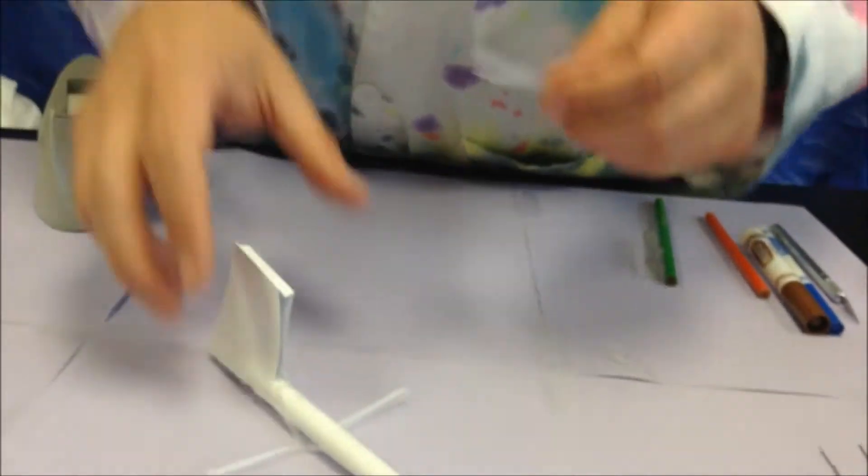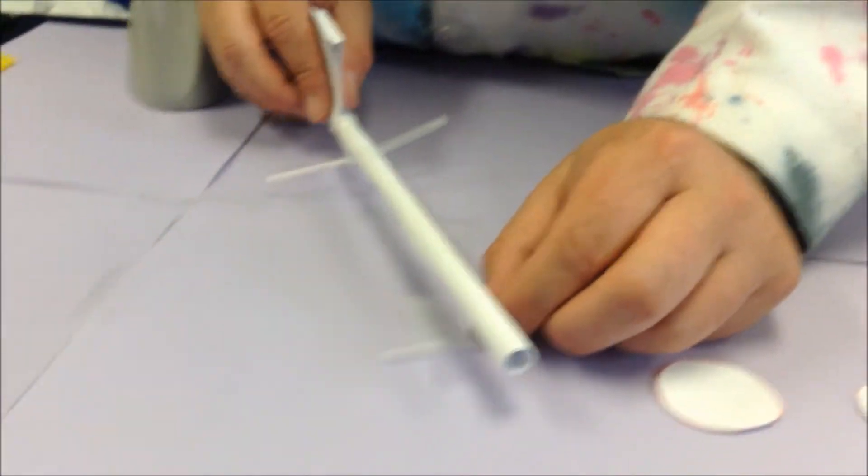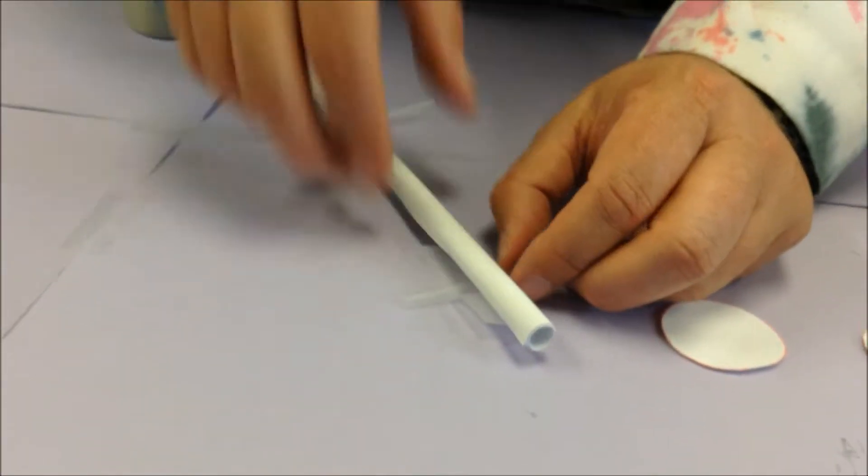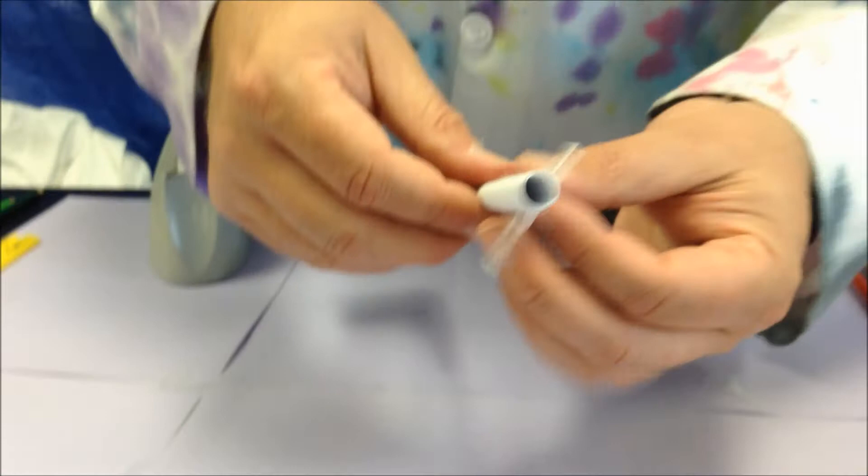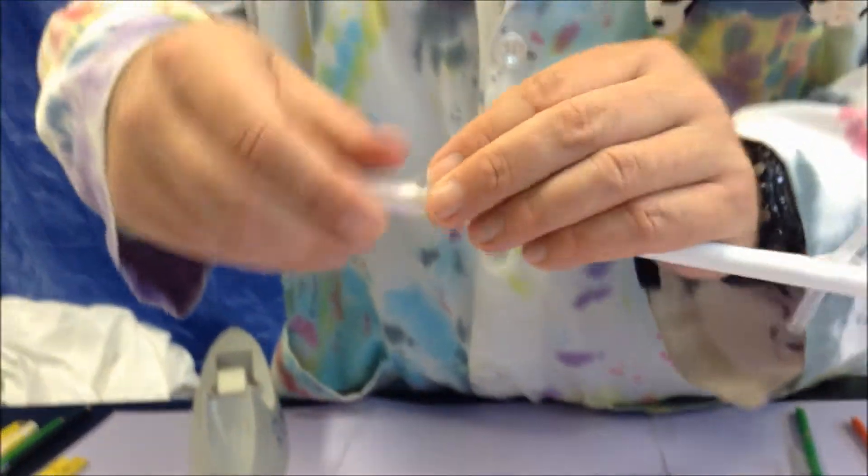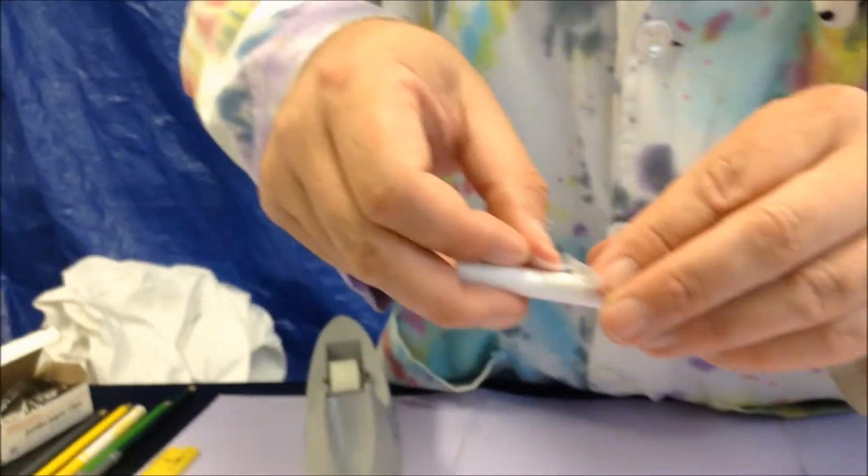I'm just going to repeat this process for the small wheels. You can see again I'm carefully putting the straw on so it is at a 90-degree angle to the body tube.